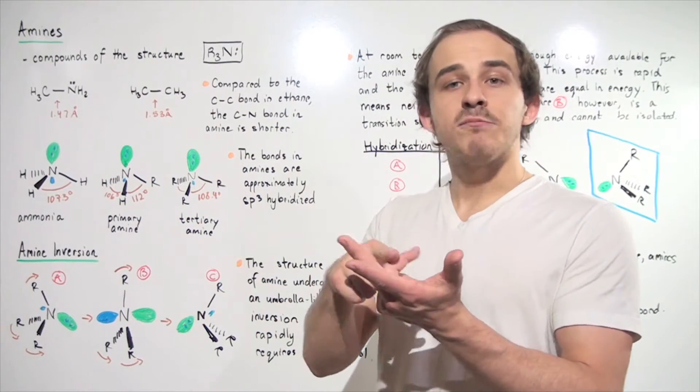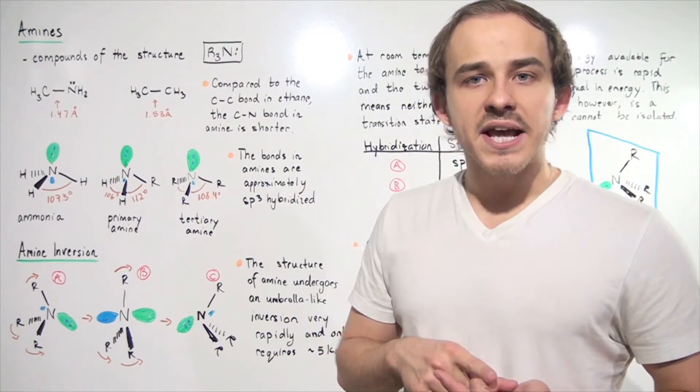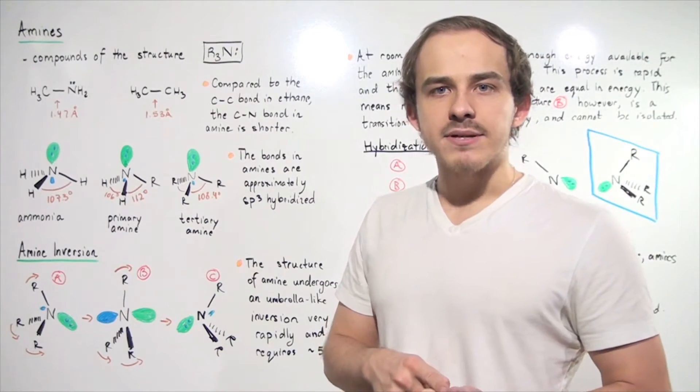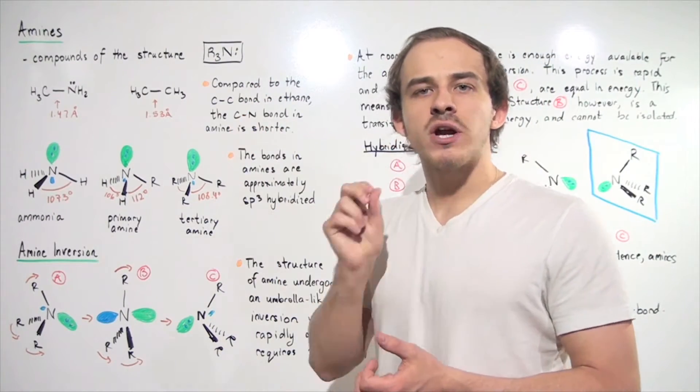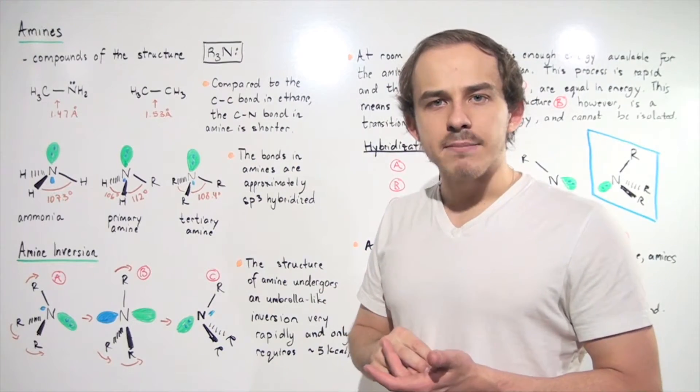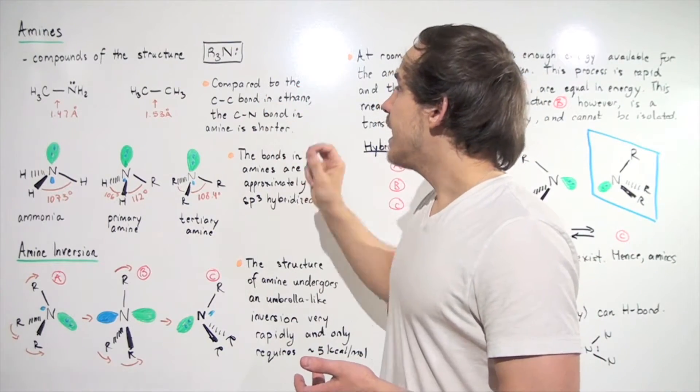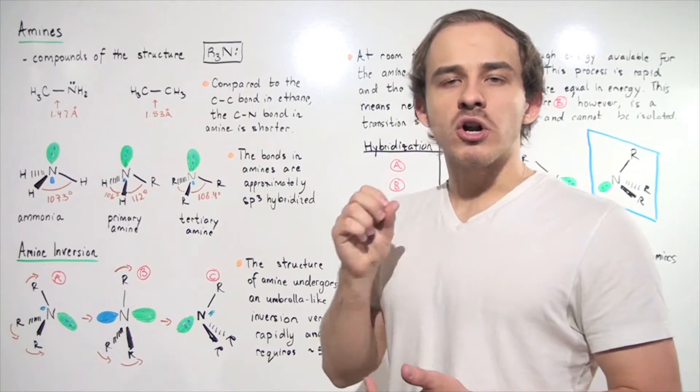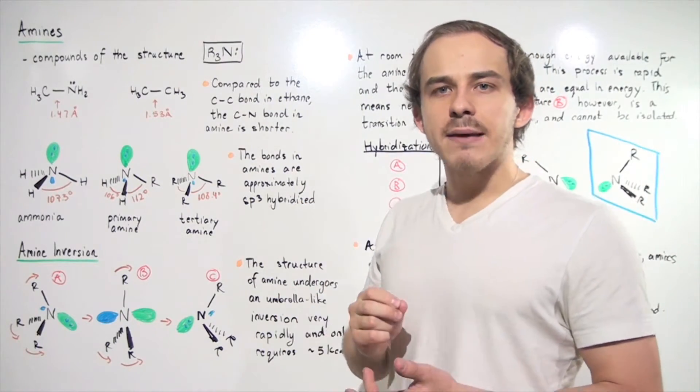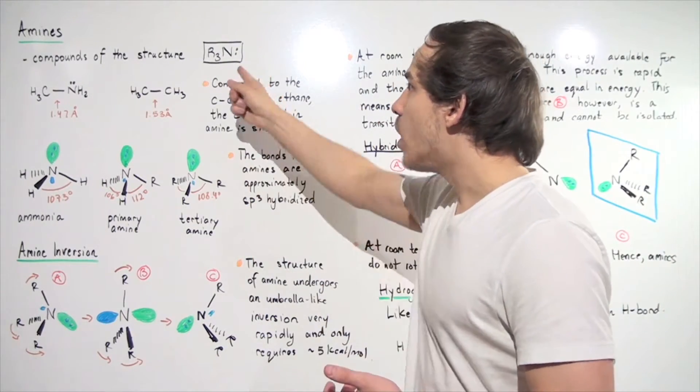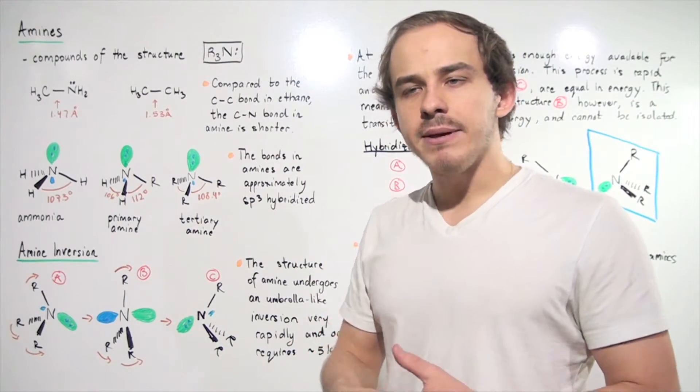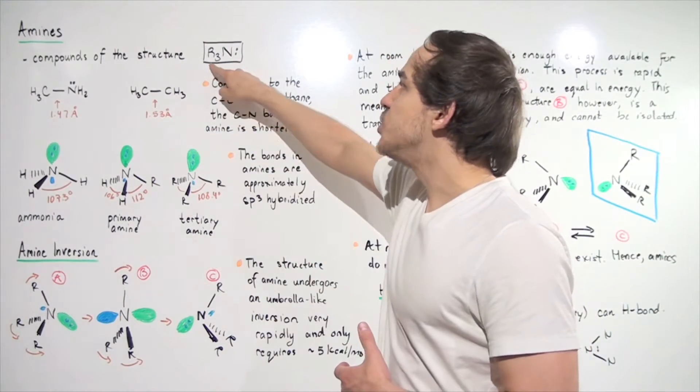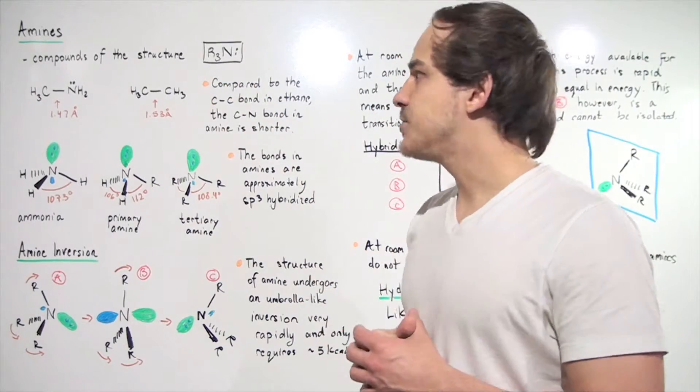We can have ammonia, primary amines, secondary amines, and tertiary amines. Ammonia is an amine in which all the R groups are H atoms. Primary amines is an amine in which two of the R groups are H atoms. A secondary amine is an amine in which one of the R groups is an H atom. And finally, a tertiary amine is an amine in which none of the R groups are H atoms.